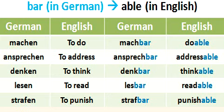Let's go through the examples again quickly: 'machen' — 'machbar' — 'doable'; 'ansprechen' — 'ansprechbar' — 'addressable'.